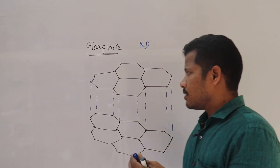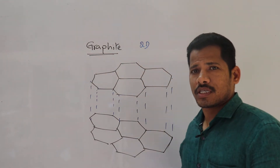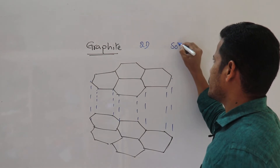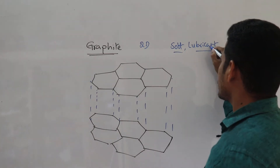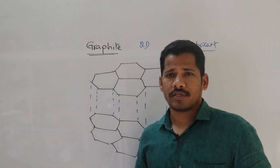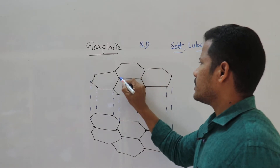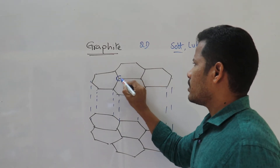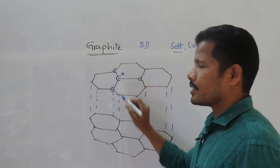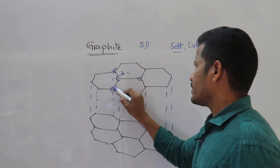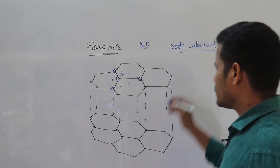Due to these weak van der Waals forces, one layer slides over the other layer. That is why graphite is a soft substance and acts as a lubricant. Each corner represents one carbon atom, and each carbon atom is surrounded by three other carbon atoms — so it is sp2 hybridization.